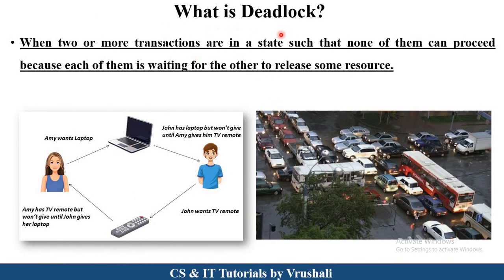First, we understand what exactly deadlock is. As we discussed earlier, there are multiple transactions performed at the same time on the same database, so there are chances of a deadlock occurring. Let's take some real-life examples. In this image, multiple vehicles are waiting for each other to go forward — this is called deadlock. Another example: Amy wants a laptop, but the laptop is used by John. John wants a TV remote, but the TV remote is used by Amy — a circular condition or loop is there, so this is also called deadlock.